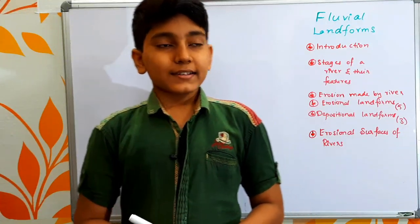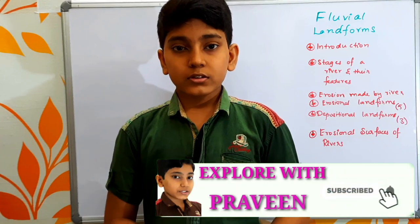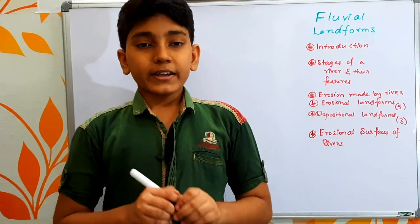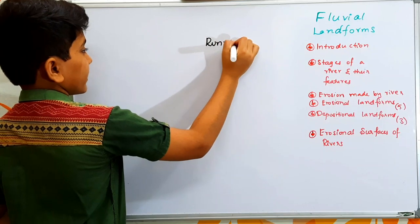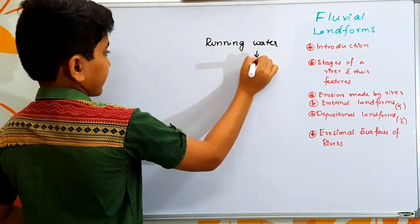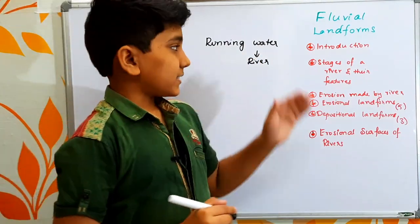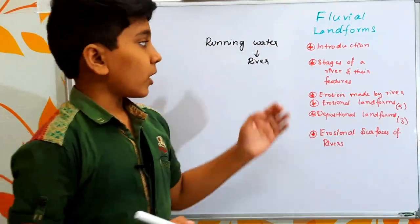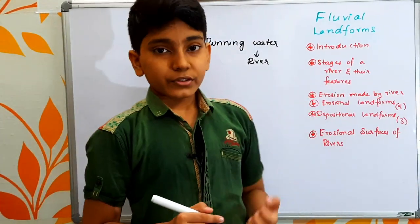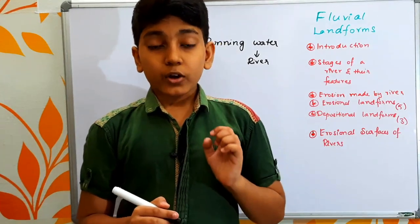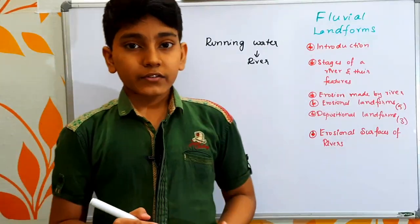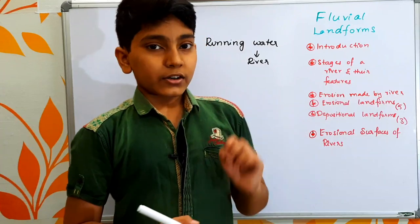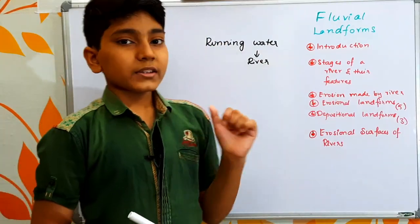Hi, this is Praveen. In this class let us discuss about the fluvial landforms. Fluvial landforms are the landforms that are created by running water, which is also considered as a river. We will be taking a brief introduction to fluvial landforms, then the stages of the river, processes of erosion, five erosional landforms, three depositional landforms, and finally the erosional surfaces of the rivers.